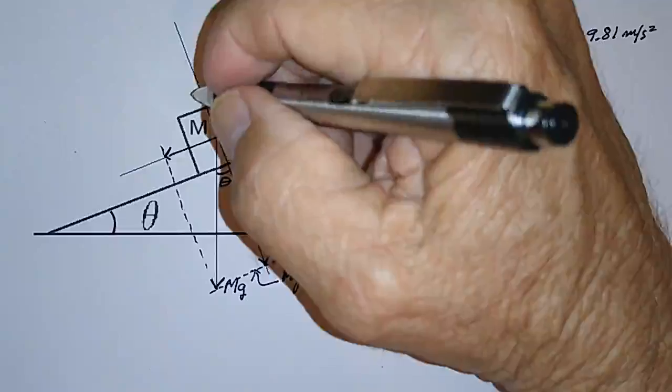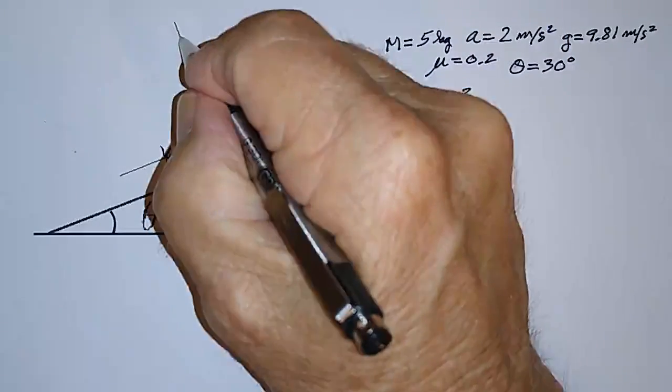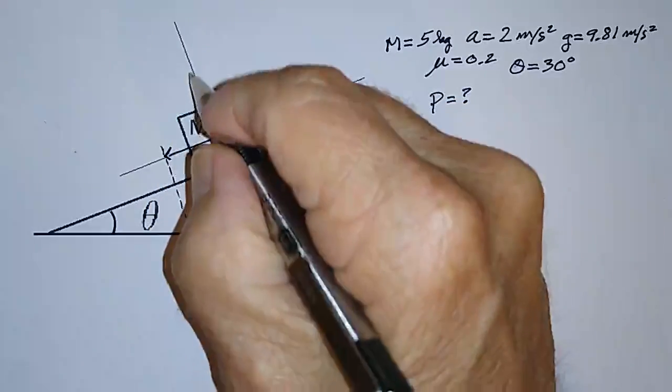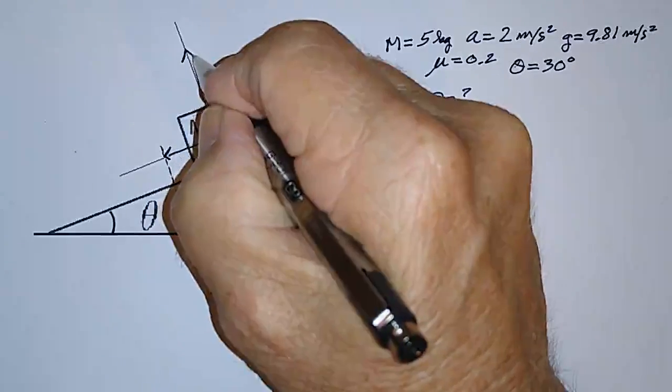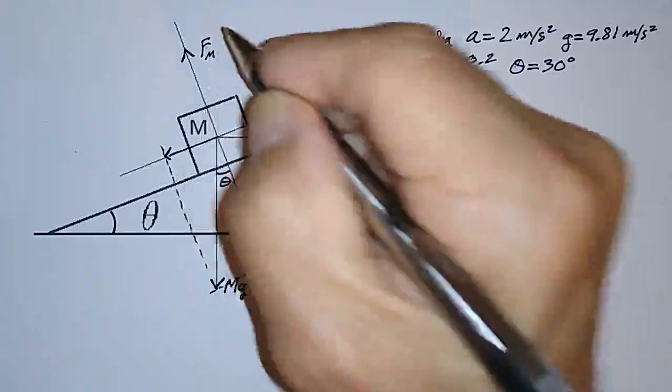And then, of course, there's the normal force exerted perpendicular to the plane in this direction. This is not to scale, but this I'm going to call the normal force, F normal.